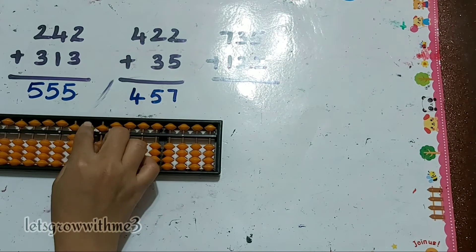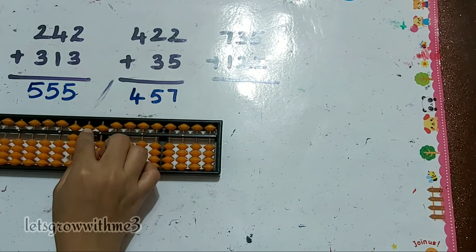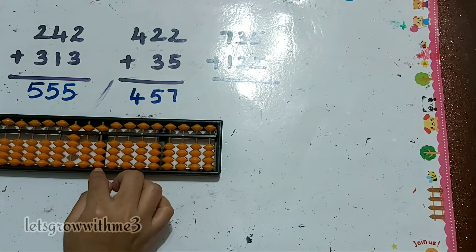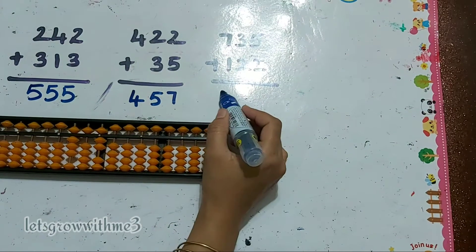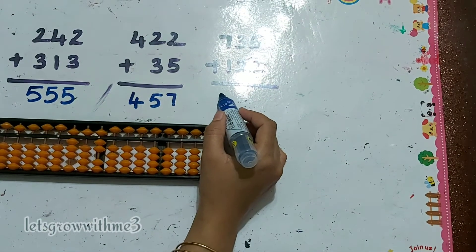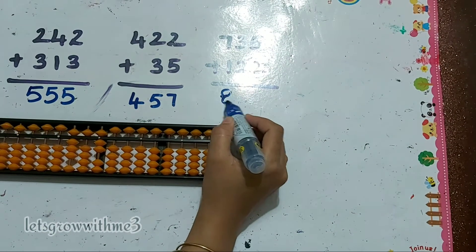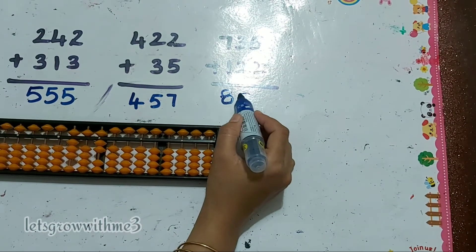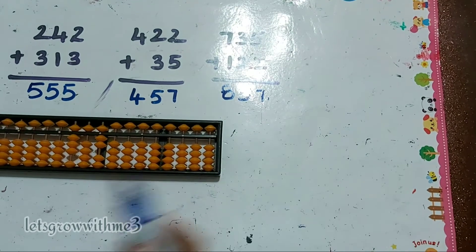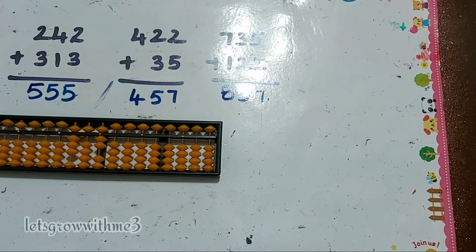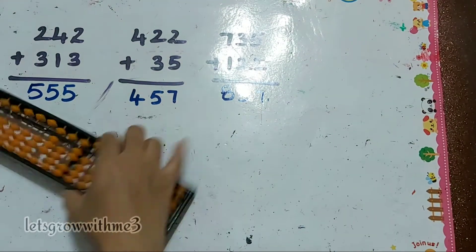How to add 2 here — plus 5 minus 3. How to add 2 here — directly we can add. So our answer is 857, okay. Let's see, we still have time.